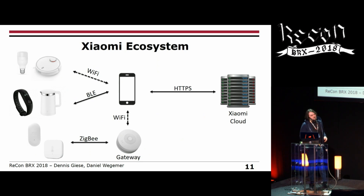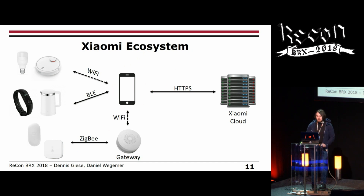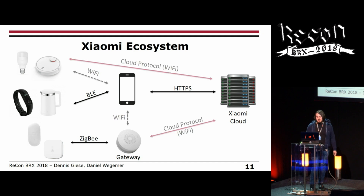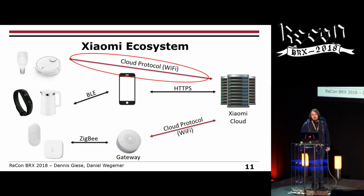Here is a simple overview of their products. You have different technologies to communicate — Wi-Fi, Bluetooth LE, or ZigBee. In the initial setup, the central point of your ecosystem is your smartphone with the Xiaomi app. After you set up the devices, the devices themselves connect directly to the cloud, so the smartphone doesn't need to handle cloud connections for the Wi-Fi enabled devices. Let's take a look at the cloud communication directly between the devices and the Xiaomi server.